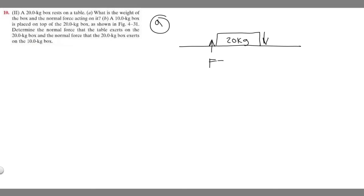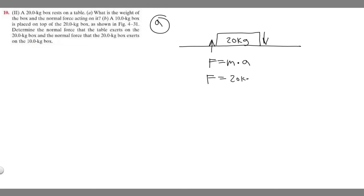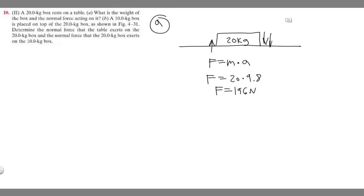We know force equals mass times acceleration. To find the downward force, we take the mass of 20 kg times the acceleration due to gravity, 9.8 meters per second squared. That gives us 196 newtons acting downward. The normal force is the same magnitude in the opposite direction, so for part A the normal force is 196 newtons.